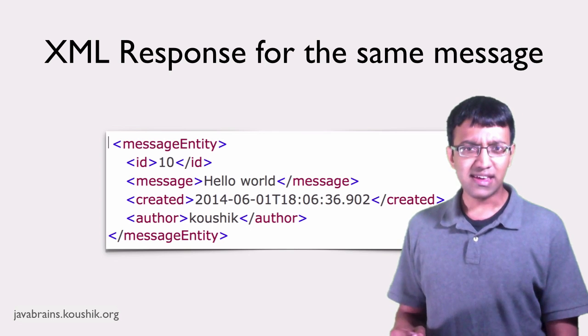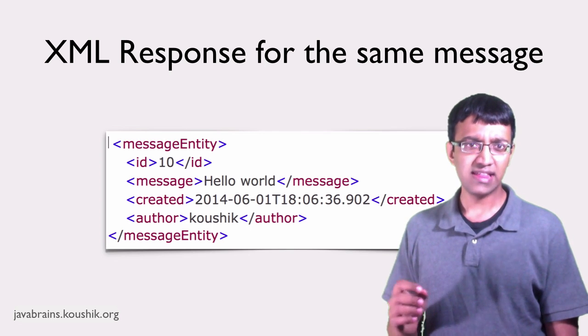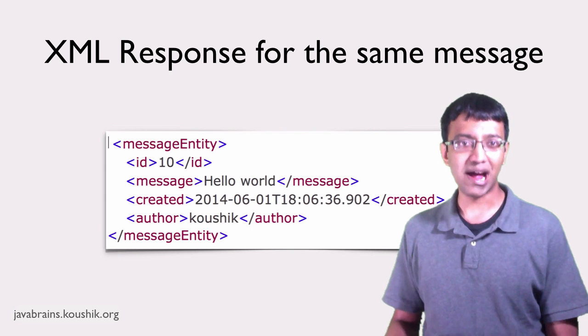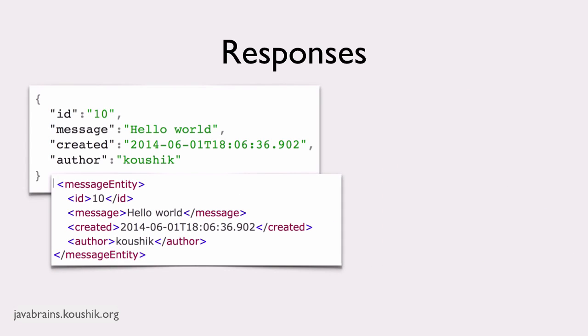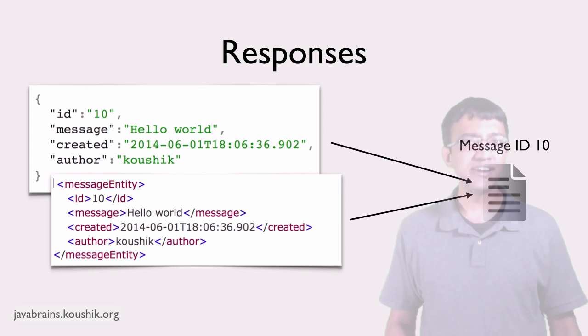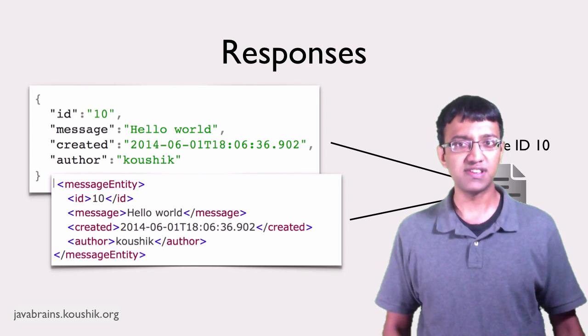Clearly, the JSON response and XML response are different. The format is different. But they still represent the same resource. They still represent a particular message, which is message ID 10. In other words, these responses are different representations of the same resource.